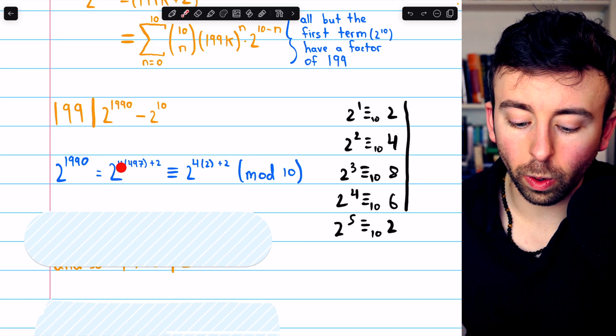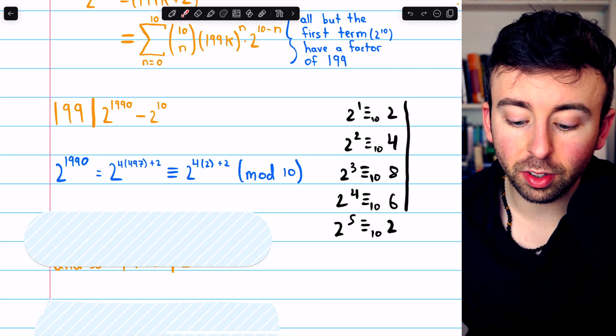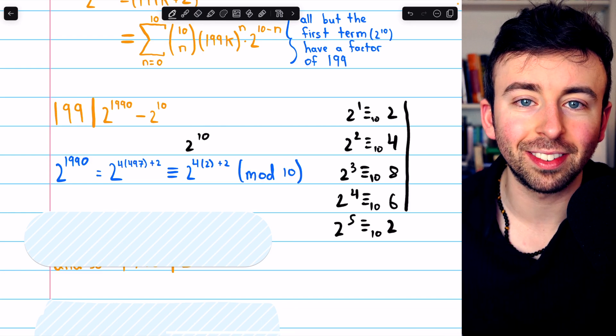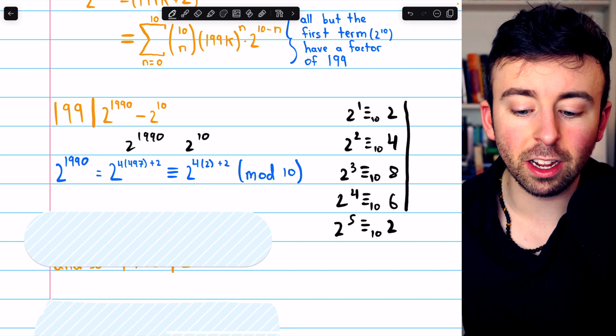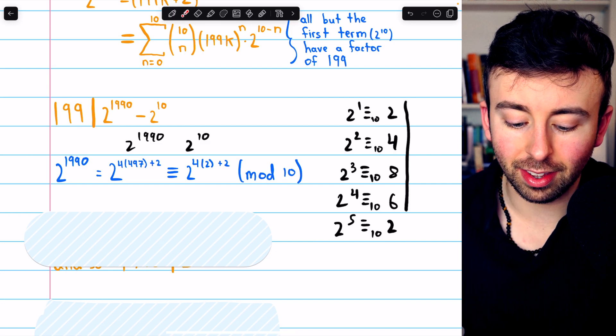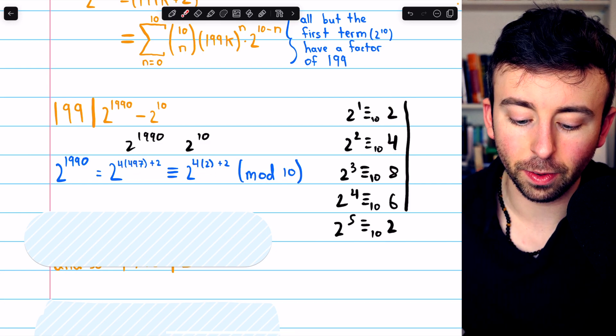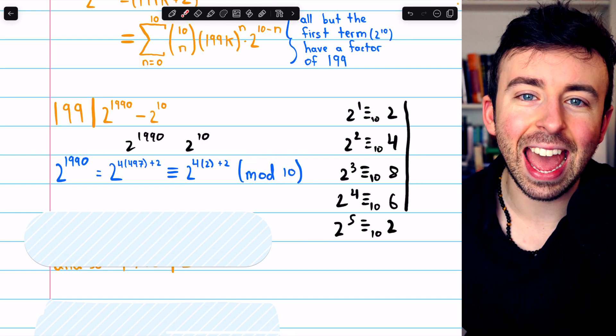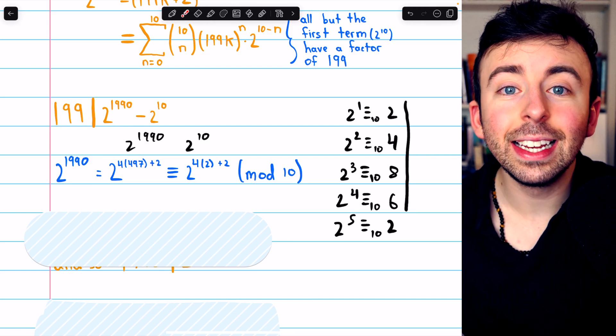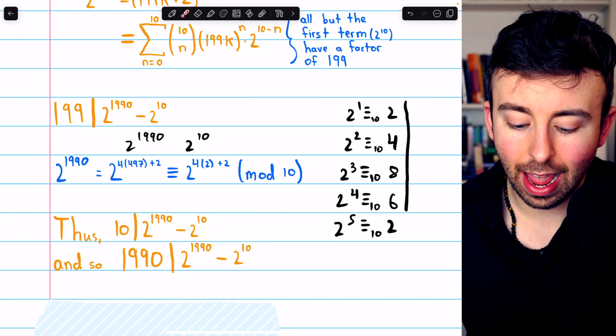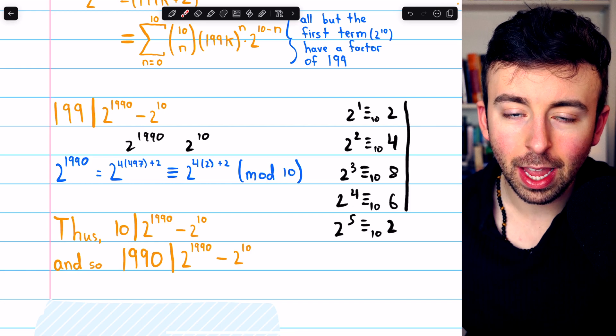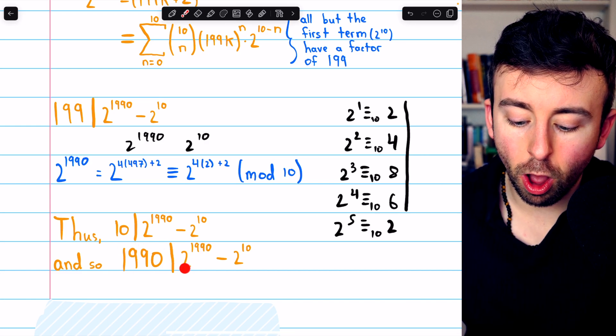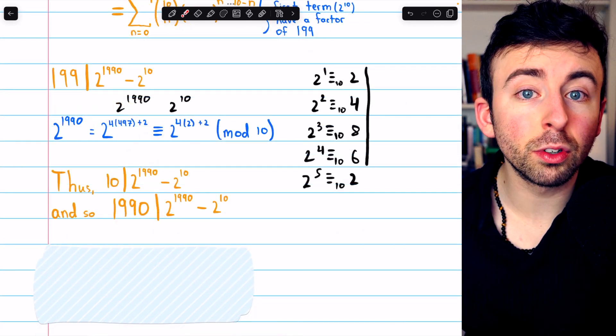So that's how we know that 2 to the 4 times 497 plus 2 is congruent to 2 to the 4 times 2 plus 2 mod 10. 2 to the 4 times 2 plus 2 obviously is 2 to the 10, which is why we're interested in it. And here on the left, again, we just have 2 to the 1990. They must be congruent to each other mod 10 because they each just go through some periods of this cycle. And then there's just an additional two factors of 2 in each case. So they're certainly congruent to each other mod 10, which means they end in the same digit. Since they're congruent mod 10, 10 must divide their difference. And so we have that 10 divides 2 to the 1990 minus 2 to the 10. And since 10 divides this difference and 199 divides this difference, their product, 1990, must also divide that difference.